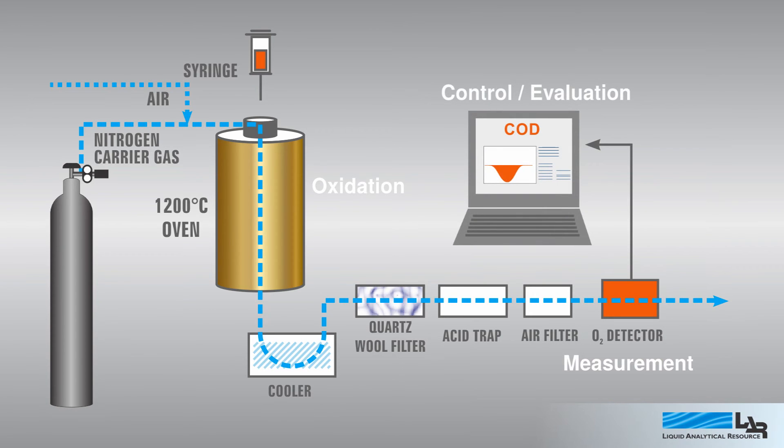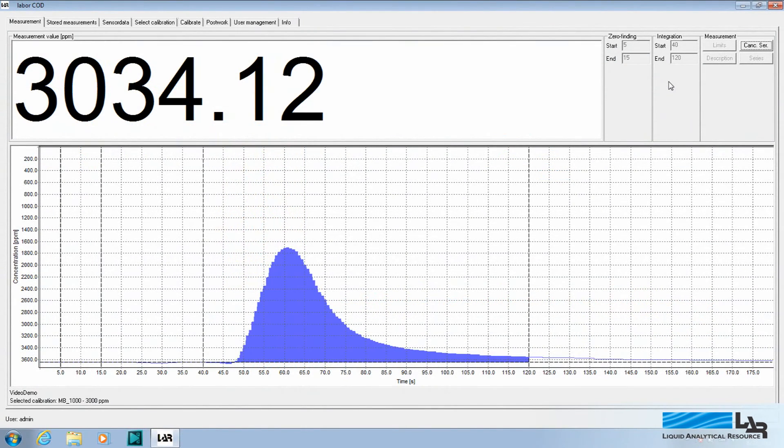As the gas passes through the O2 detector, the measurement is transferred to a Windows PC where software inverts the negative oxygen depletion curve to display a positive oxygen demand curve. The total area within the curve is calculated to provide a complete TOD measurement.